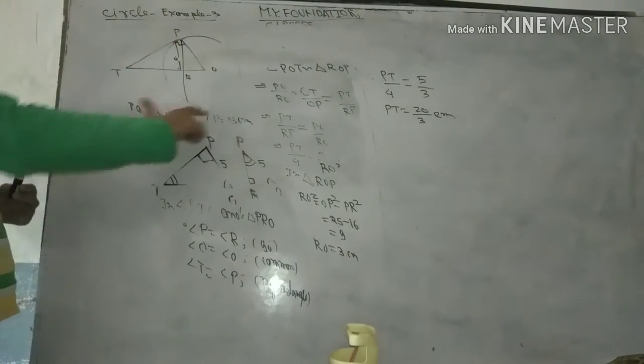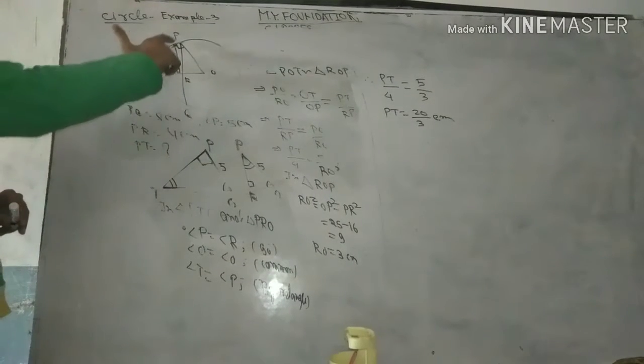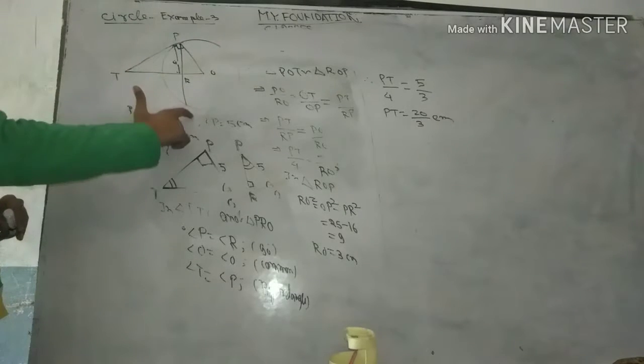We have given a circle whose center is O. Radius is equal to 5 cm and we have given chord PQ is equal to 8 cm.